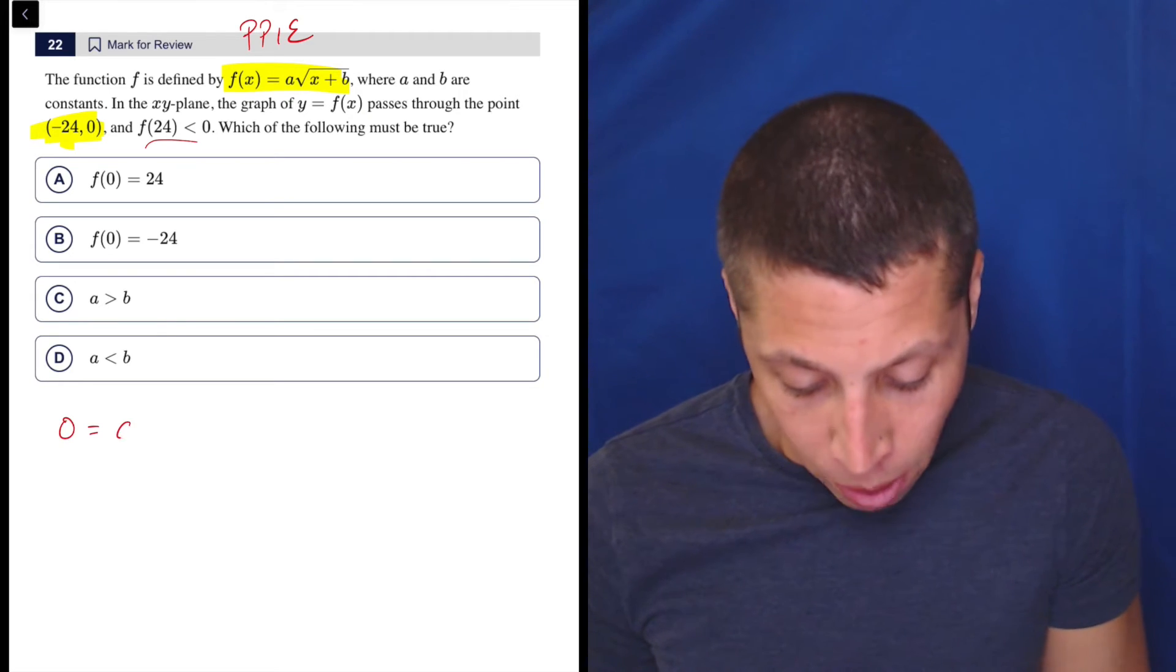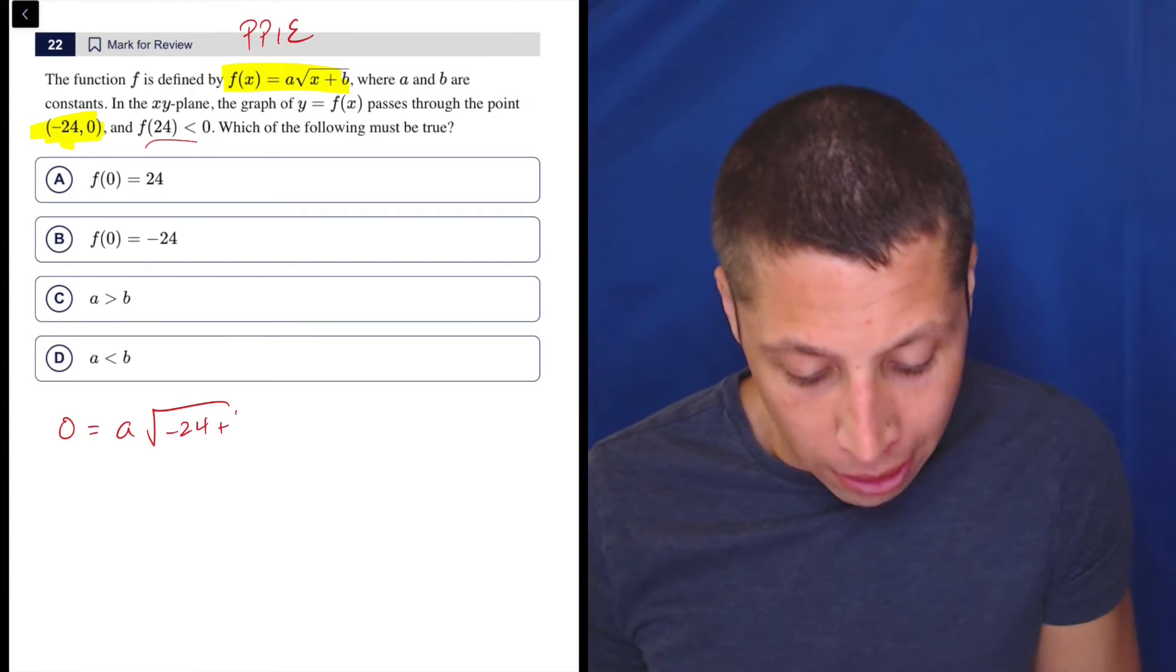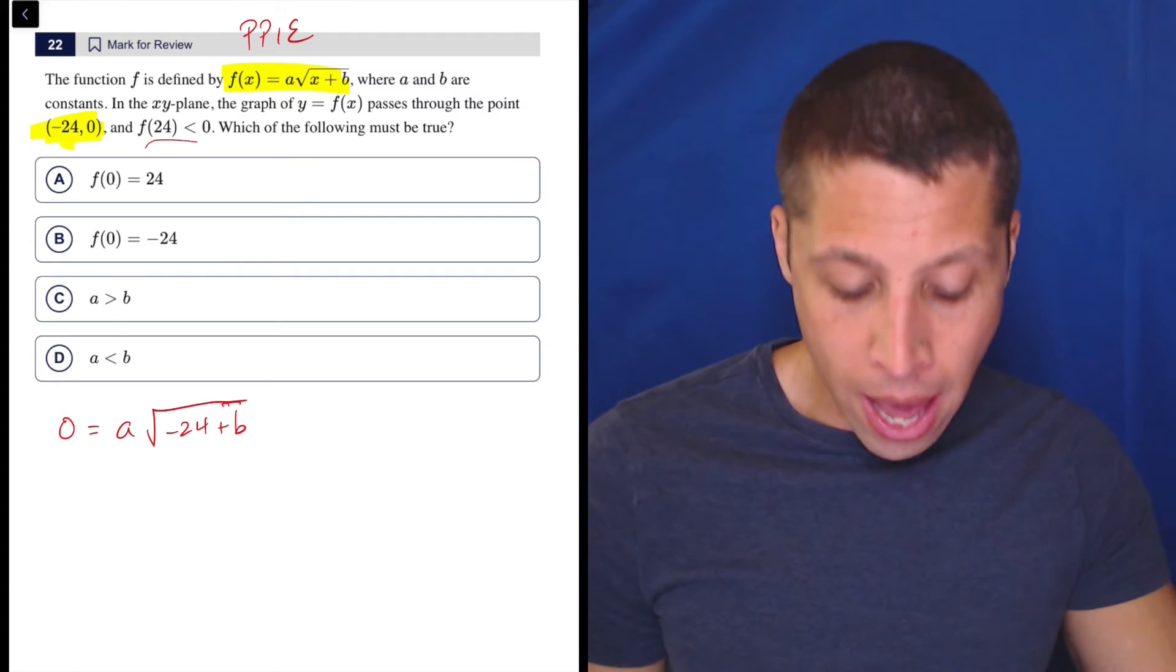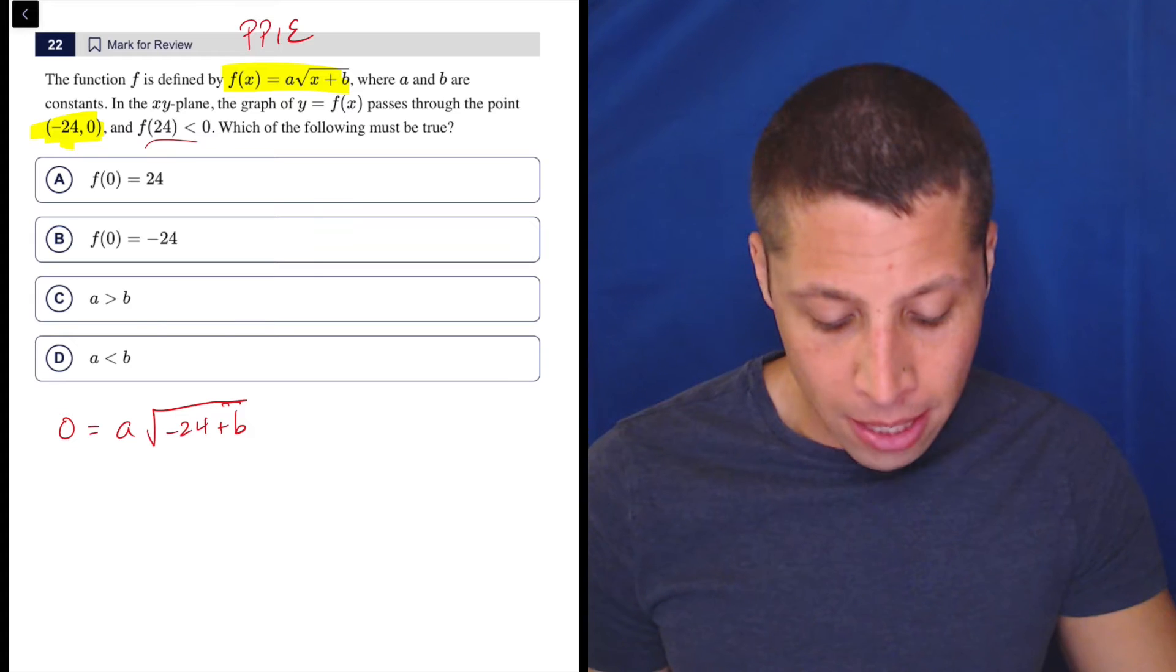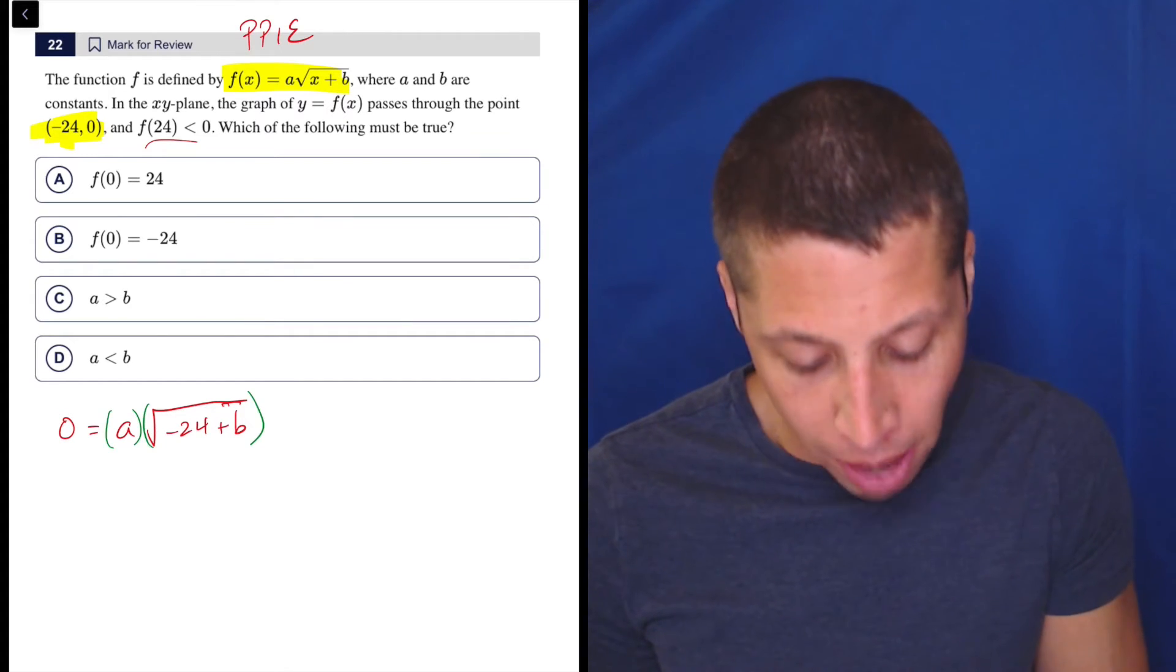So 0 is equal to A times the square root of negative 24 plus B. Now, because I understand the properties of 0, I'm okay thinking, all right, what this means then is I really have two terms. I have an A and this kind of radical term.